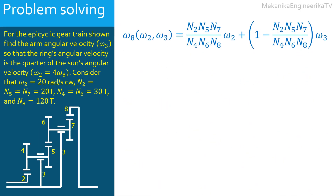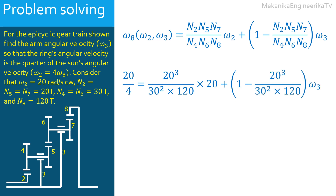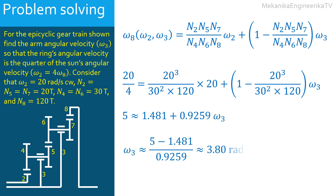After establishing the equation of ω₈ in terms of ω₂ and ω₃, we substitute all given parameters by their numerical values. Using a calculator gives that 5 is approximately equal to 1.481 + 0.9259 · ω₃. Solving the equation gives ω₃ = 3.80 radians per second. The arm should rotate in the same direction as the sun, in the clockwise direction. Finally, the answer to the problem is ω₃ = 3.80 radians per second clockwise, considering three significant figures.